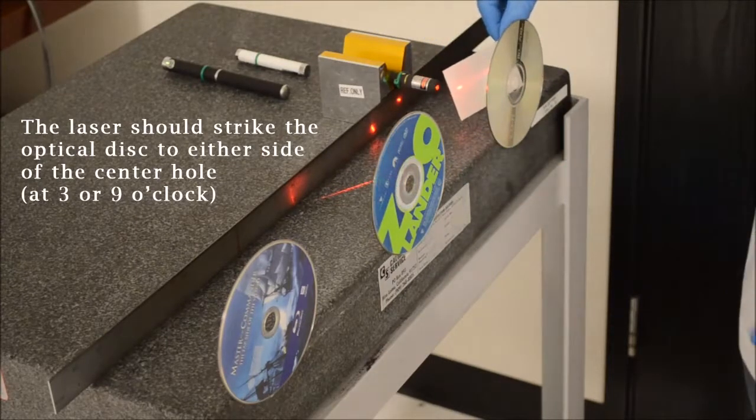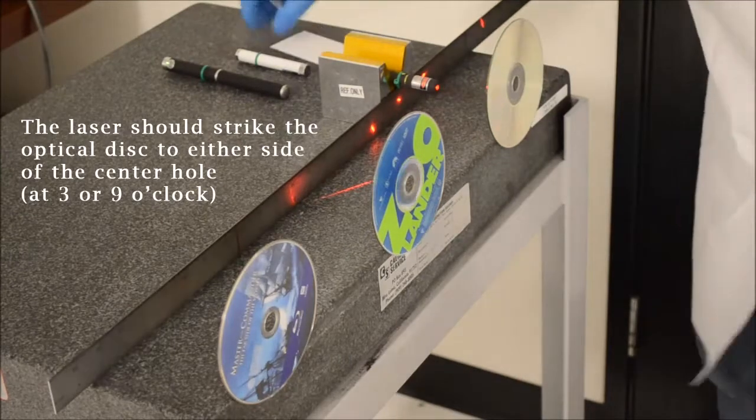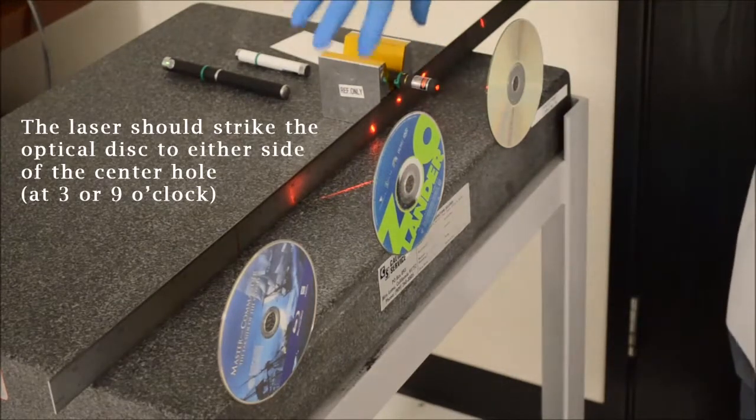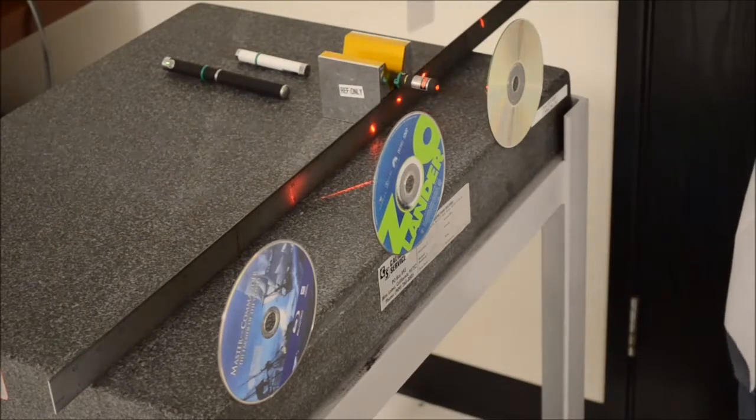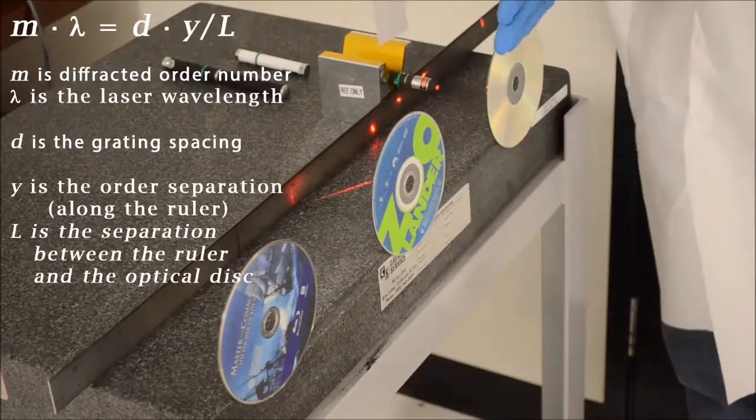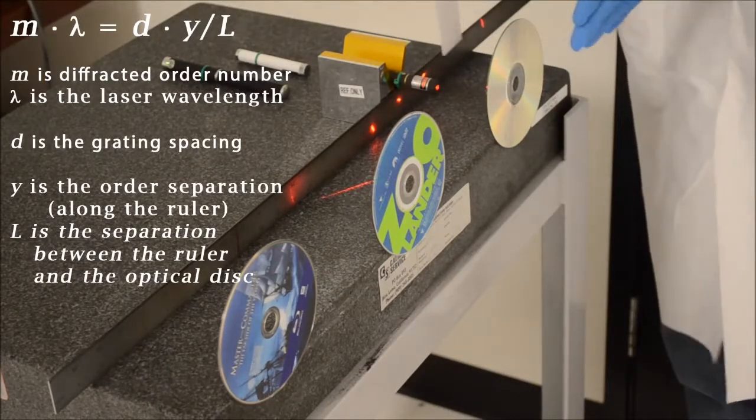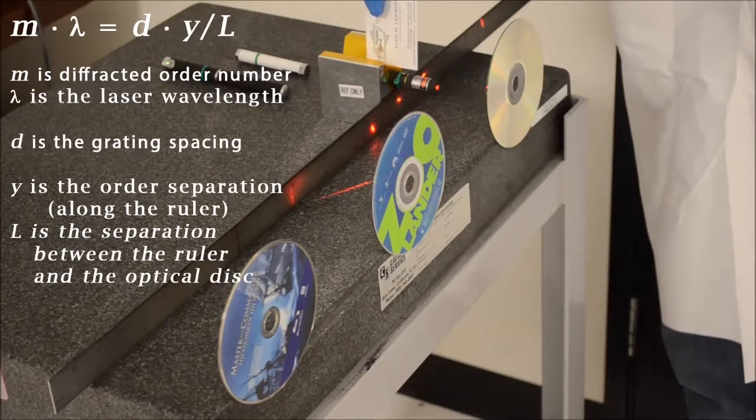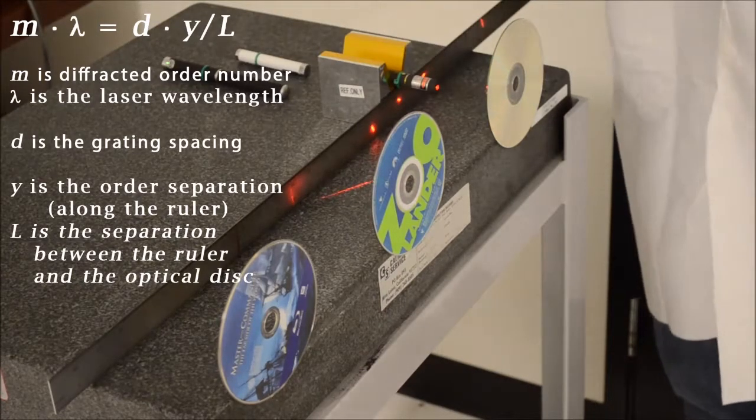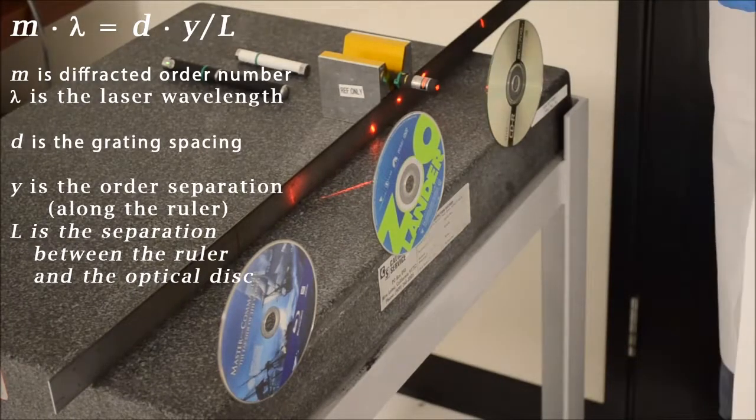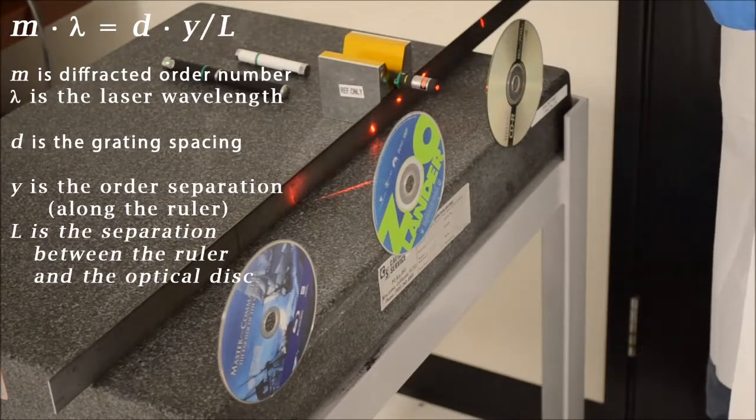If I move over to this side, you can see a second order from that CD light. We've put our ruler attached to our V block and this ruler is calibrated with gradations. So we can actually measure the distance between the V block and the diffraction grating, and we can measure the distance between the laser and the diffracted orders in order to calculate the wavelength of the laser or calculate the spacing of the grooves in the CD. That's known as the track pitch.